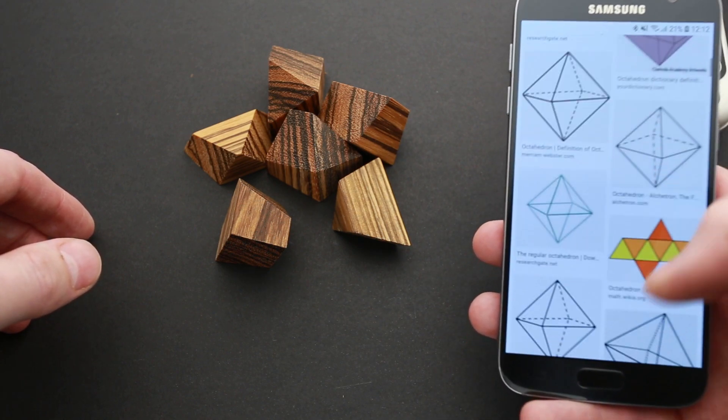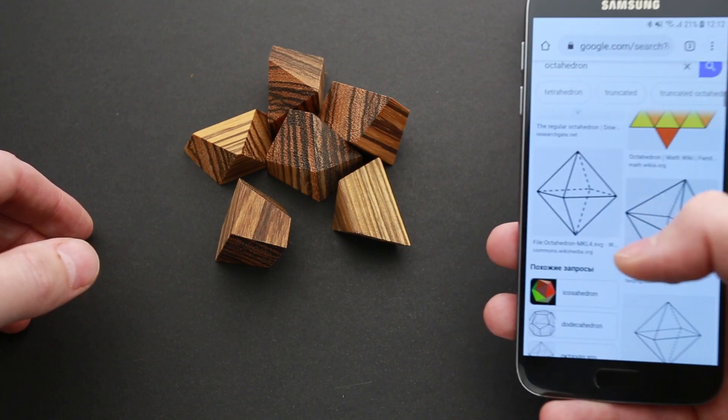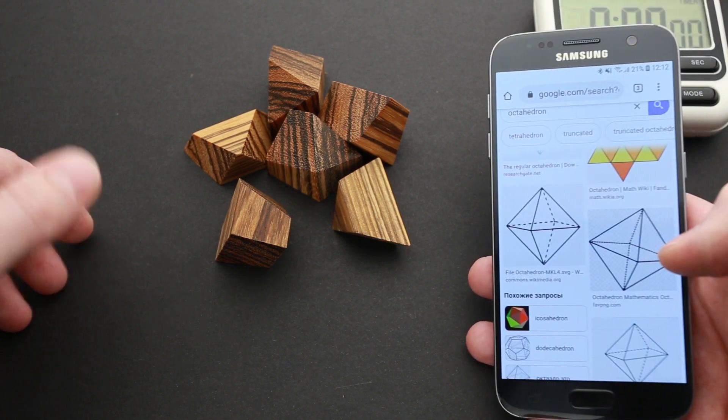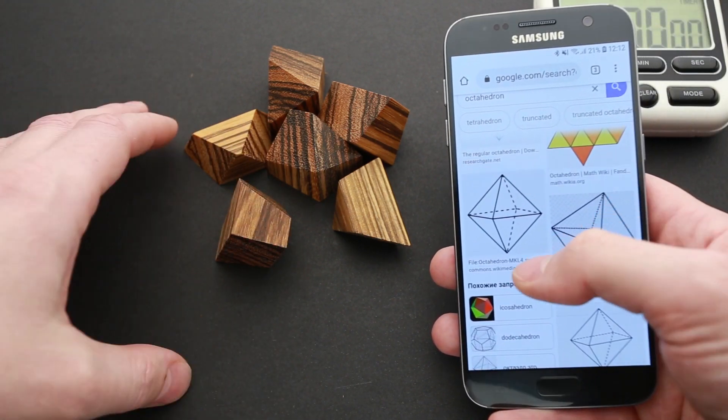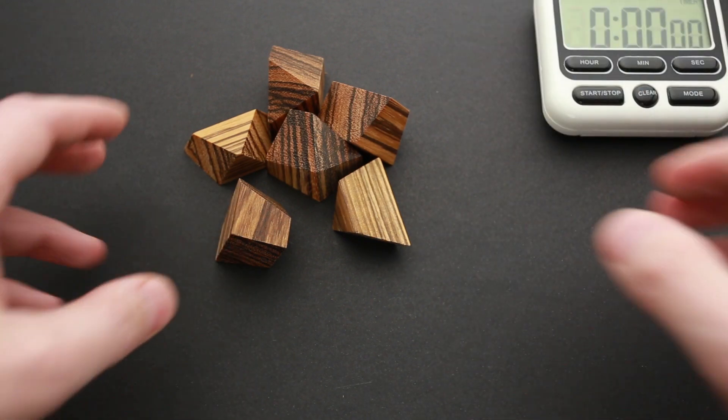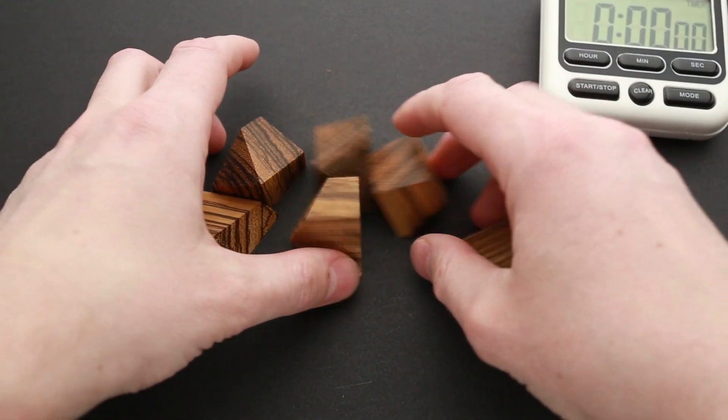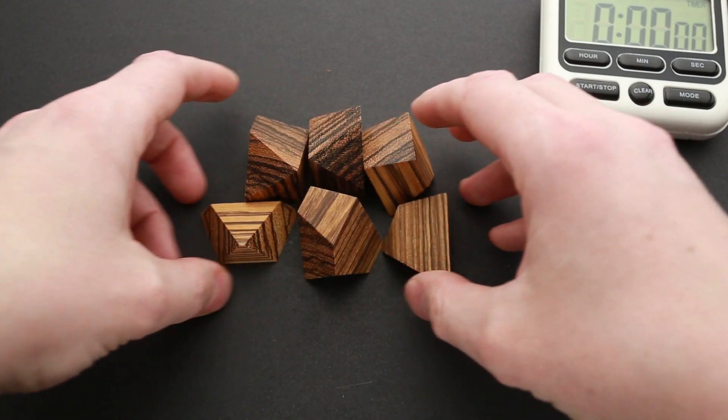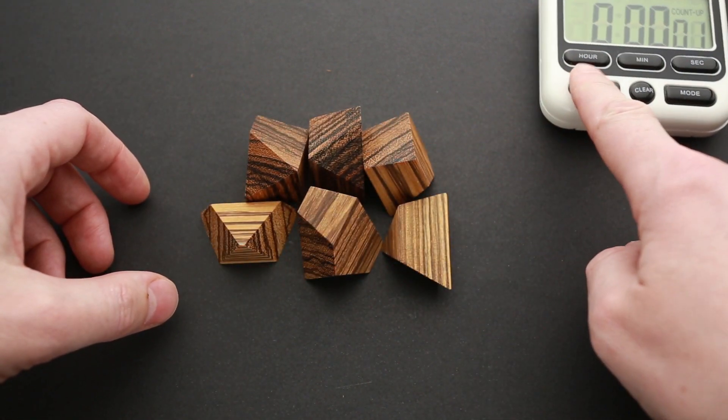Octahedron looks like this and basically it's like two pyramids glued together. Now when I know how it looks, I have to try to put all these six parts into octahedron shape. So I'll start my timer.